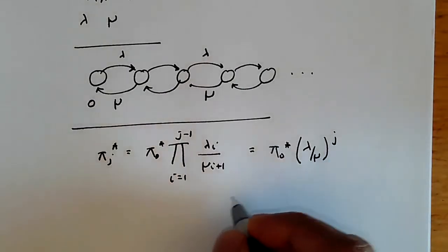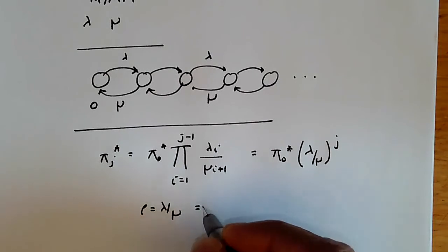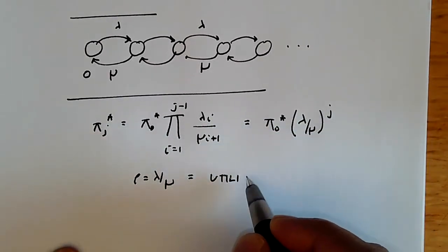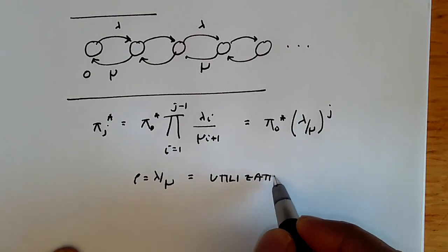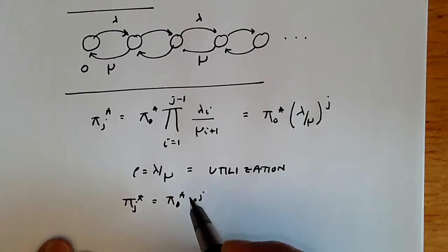We often denote rho equals lambda by mu, and rho is also viewed as the utilization of the server. This is the utilization, in which case we can write pi j star as nothing more than pi zero star times rho to the j.